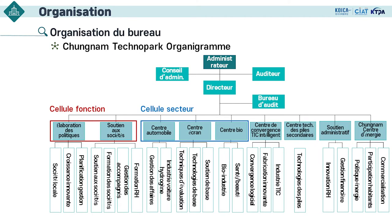Voici l'organigramme de notre parc. Tout en haut, il y a l'administrateur — le chef du gouvernement municipal, soit le gouverneur de Chungnam. En tant que comité suprême de la prise de décision, le conseil d'administration doit tenir au moins une réunion par an, comme l'indiquent les statuts.